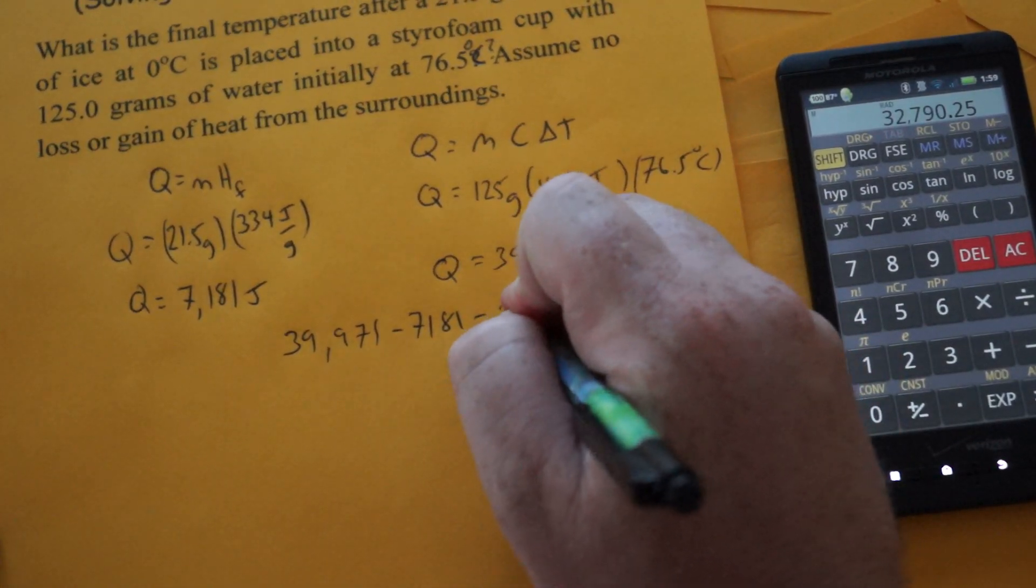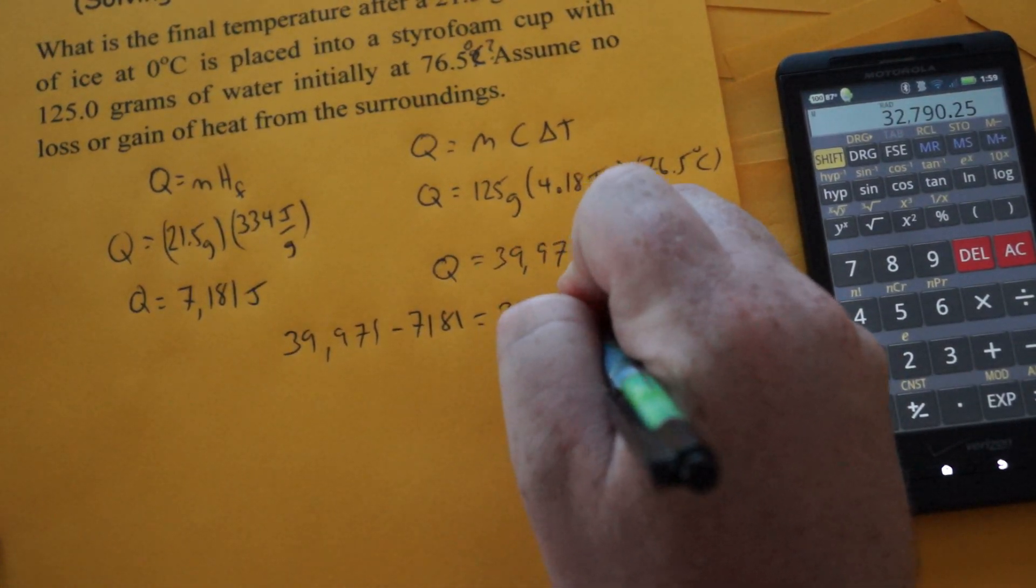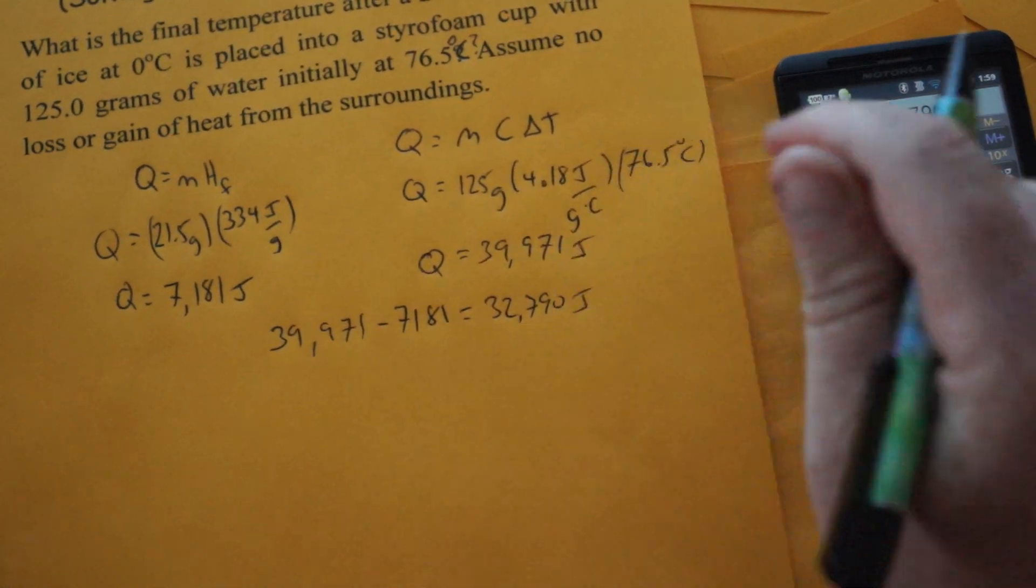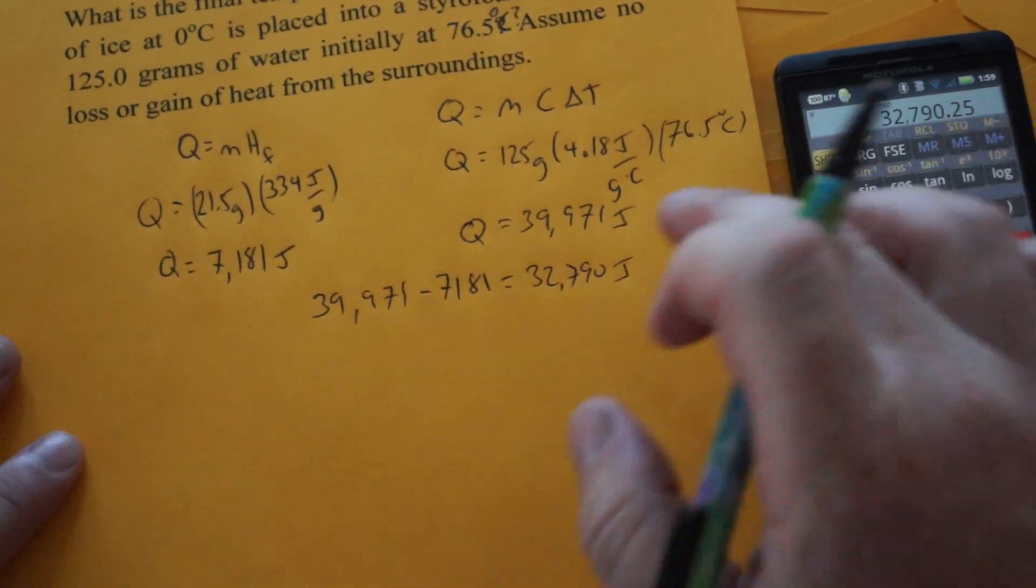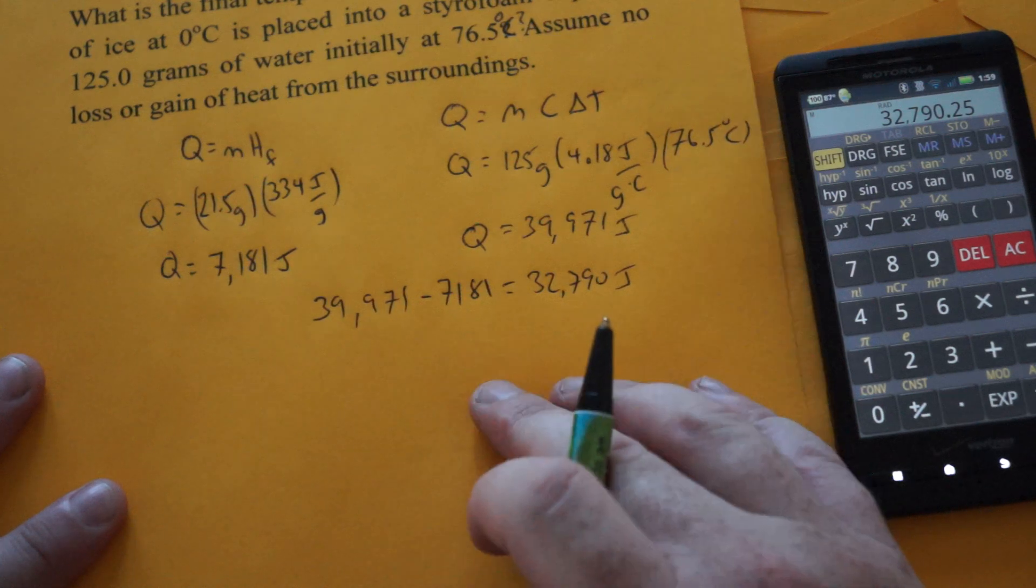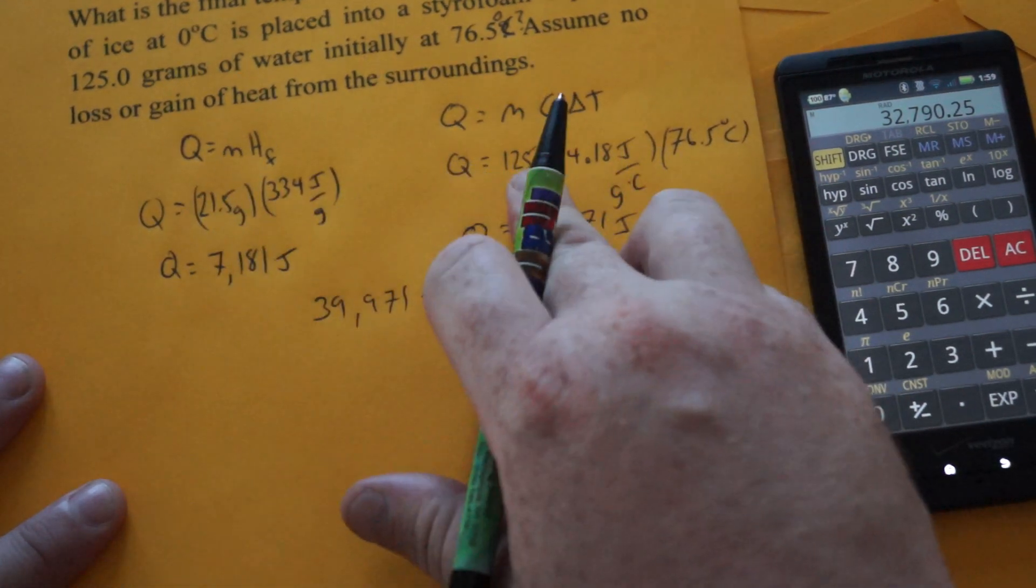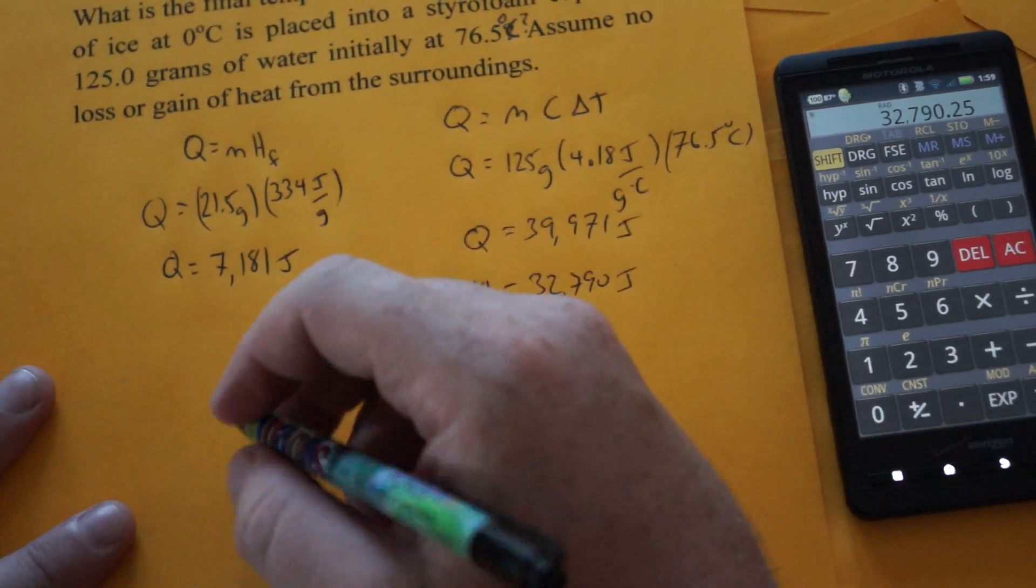And that's going to equal 32,790 joules of energy left over. Now we're going to reapply that to this equation. Now just be sure to add the two masses.